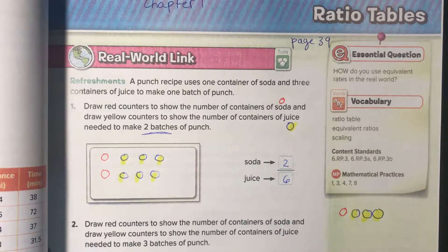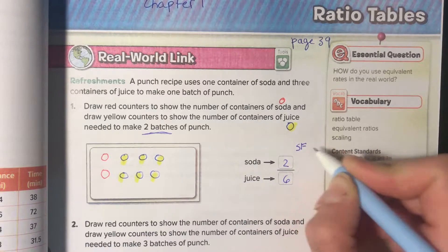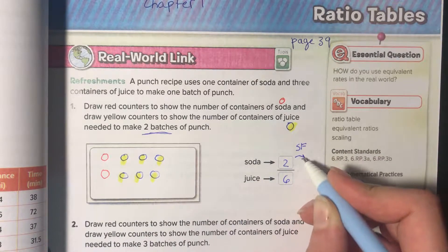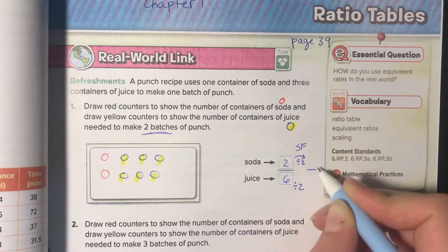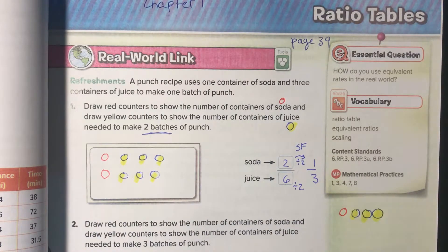If I was going to put that in simplest form, because remember we always put things in simplest form, what would it be? Well, I'd need to divide by two and divide by two, which would give me one to three.